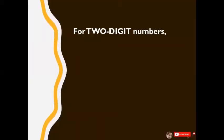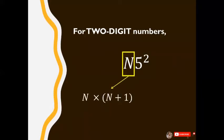For two-digit numbers, we have N5 squared, where N represents the tens digit. What we're going to do is get N times the quantity of N plus 1, and on the other side, we get 5 squared which is 25. After that, when we have the answer for the tens digit, we just combine it with 25.